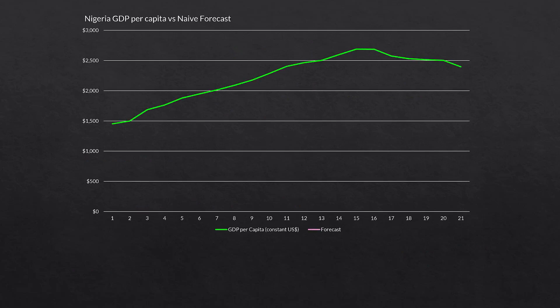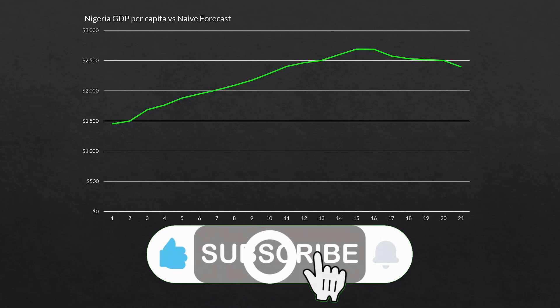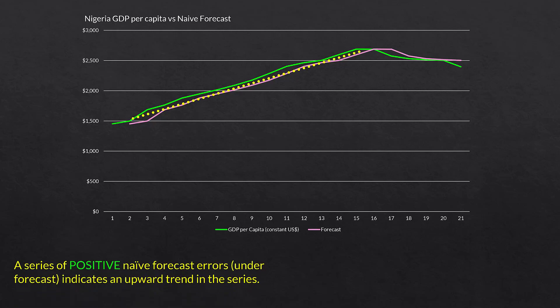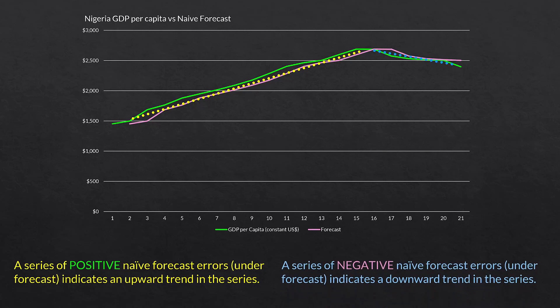The graph shows the actual data in the green line, starting around $1,500 per person in the year 2000, going up to around $2,500 or more around the year 2014 to 2015, and then flattening out a bit. Using the naive forecast, the entire thing just shifts over one time period — almost a mirror image shifted right one period. A series of positive naive forecast errors, which are under-forecasts, indicates an upward trend. The forecast cannot keep up with the actual values because of the upward trend. Conversely, a series of negative naive forecast errors indicates a downward trend in the series.